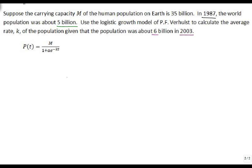So, we need to identify what we know. We're going to let T be measured from 1987. We also know that from the logistic growth model, that our population at that time, P of 0, is 5 billion. We know that M is 35, and we also know that P of 2003 is 16 years, P of 16 is 6.